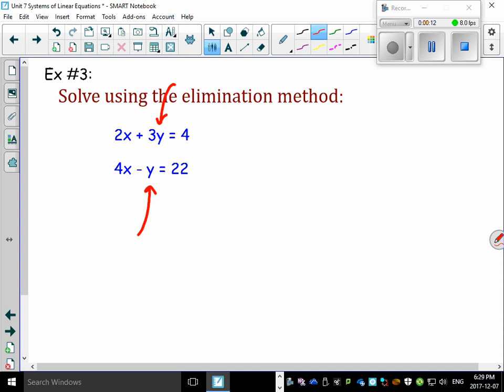But remember what we did in the last question? They didn't match very well either, and I just multiplied it by negative 1. As long as I do the same thing to both sides. If I multiply by one side, I multiply the other side by the same number. Look what I'm going to do. I'm going to multiply this whole thing, left side and right side, by 3.